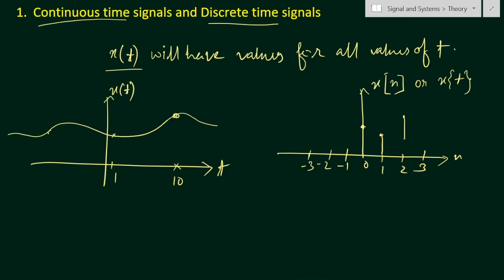For example, at n equal to 0, 1, 2, 3, minus one, minus two, minus three, we have specific values. But at n equal to 0.5, which lies between 0 and 1, there is no value — because this is a discrete time signal. We only have x[n] values at discrete integer intervals; for all remaining values there is no signal value.